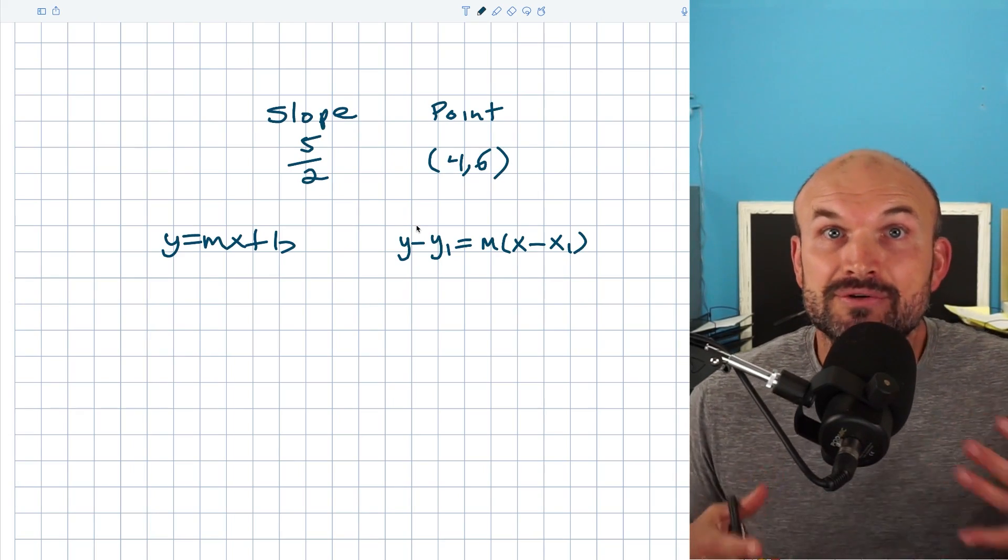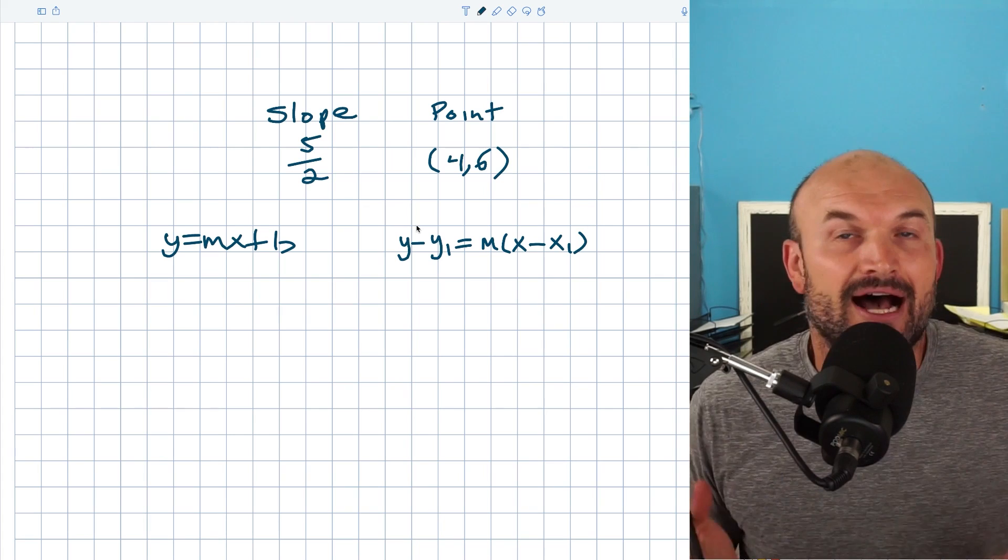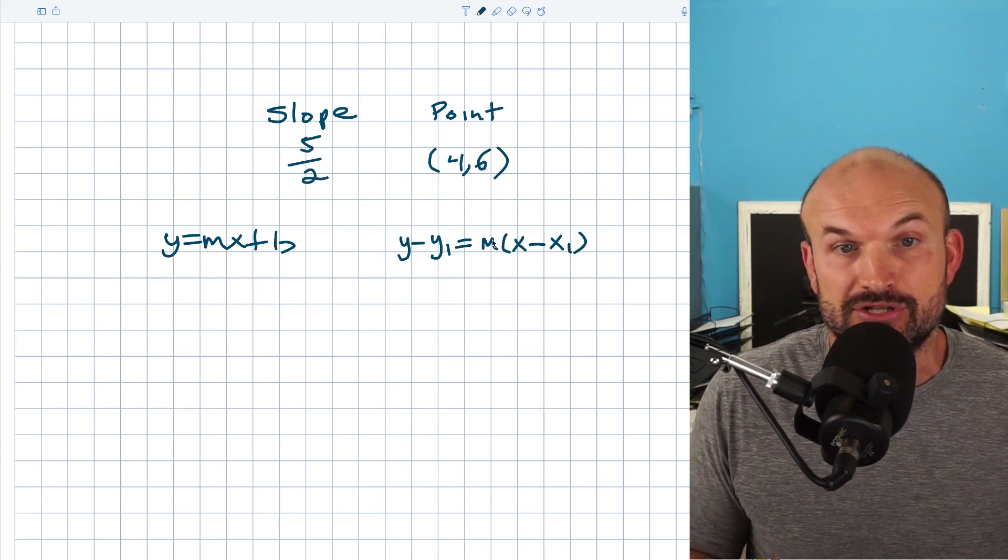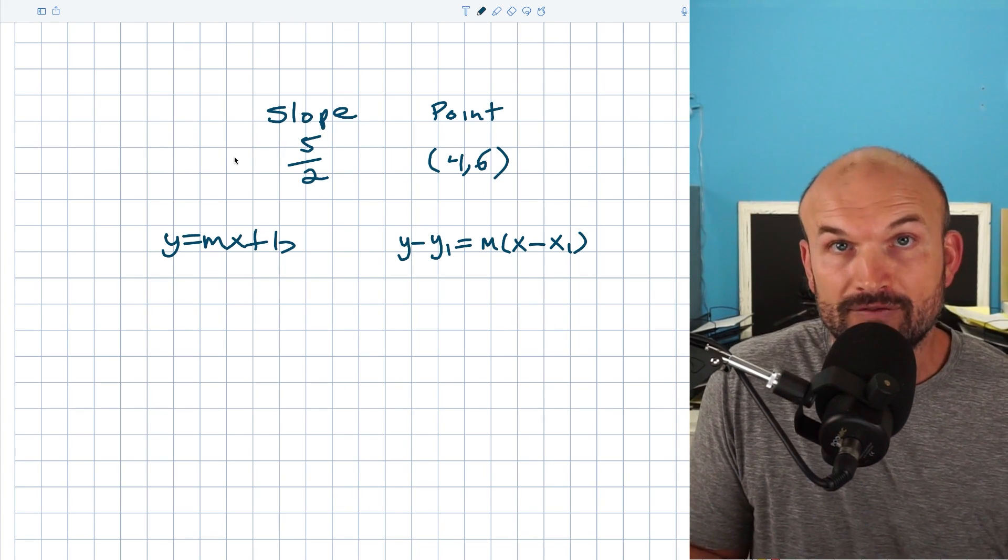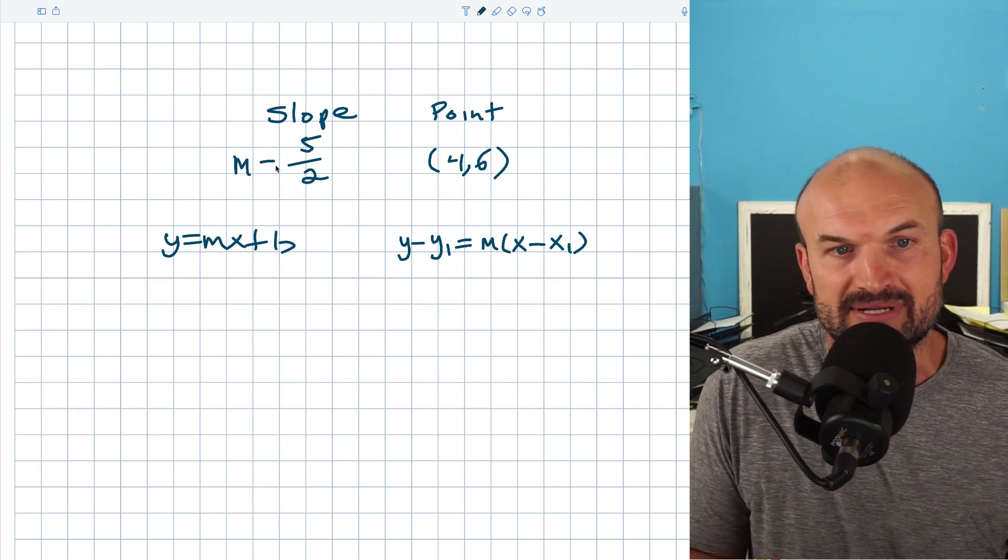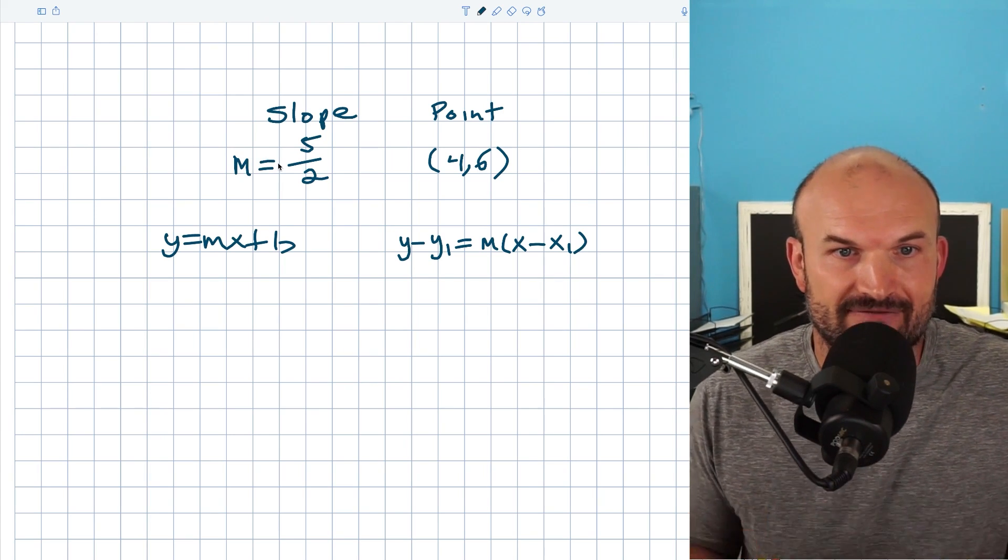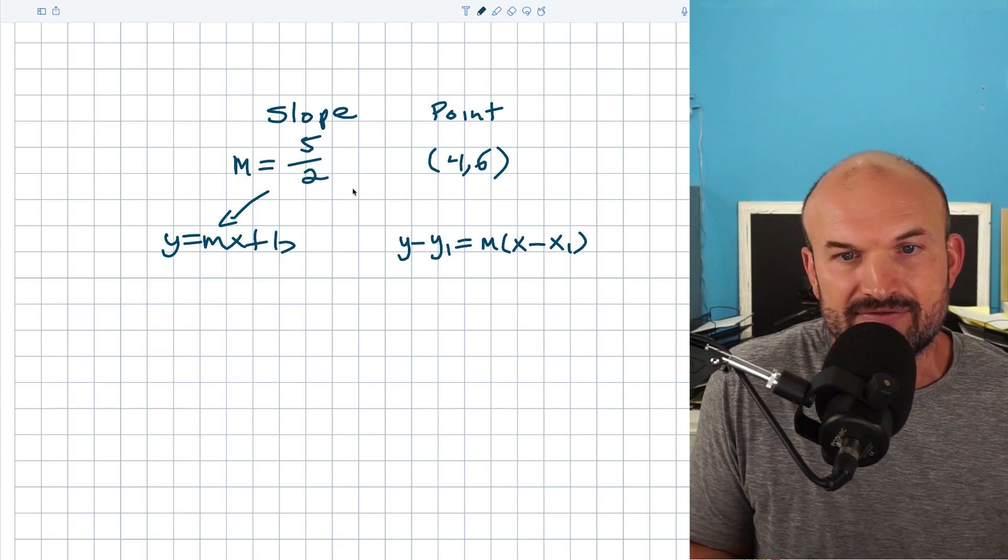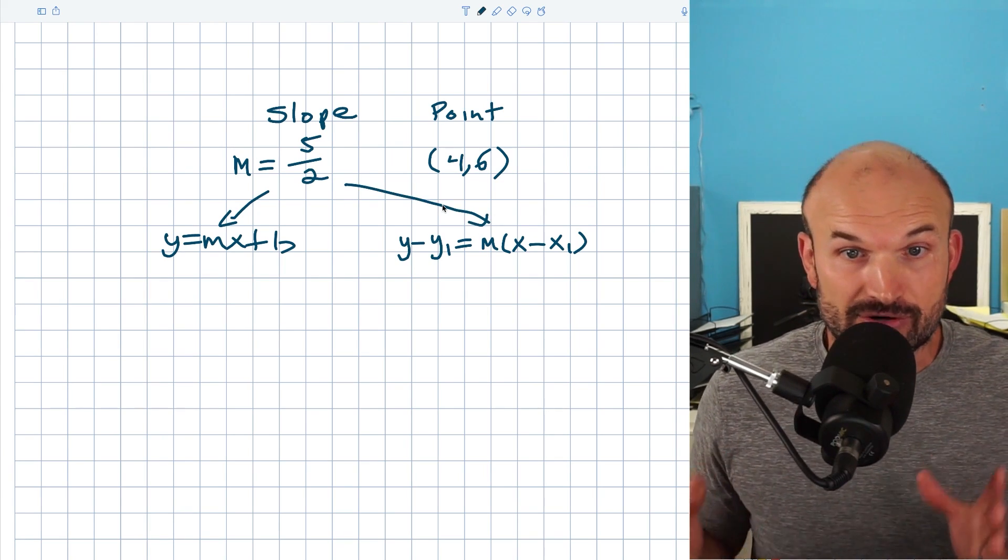Let's go ahead and review both of these and then you can make the determination for yourself on what method you would prefer to do. So for the first part, we have the slope. And hopefully at this point, you recognize that slope we represent as m. So m equals five halves. And you notice that in both these equations, we have a spot for our m. So that is going to be pretty straightforward.